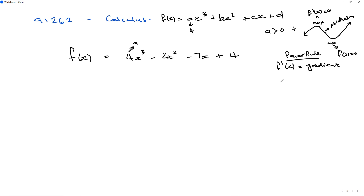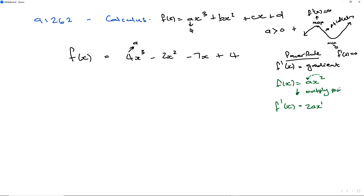Let's suppose we work out the power rule with the following function: f of x equals ax squared. When I derive this function, I take 2 to the front and multiply it by a — that becomes 2ax — and then 2 minus 1 is 1. So I end up multiplying the power by the coefficient, then subtracting 1 from the exponent. That gives me 2ax.